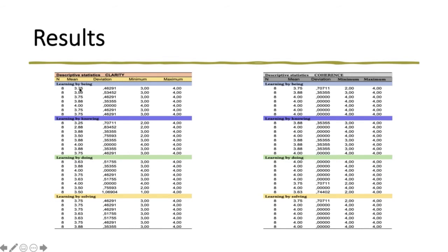Here is the data of the mean and the deviation for clarity and coherence. We follow the criteria that only items with a mean higher than three points can be used. In the case of the deviation, it has to be less than 1.5 points.